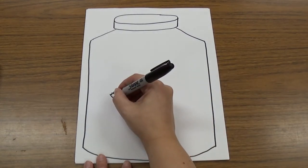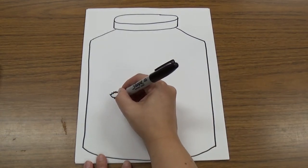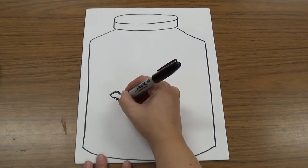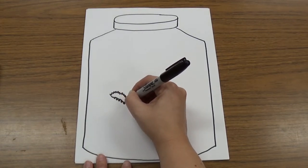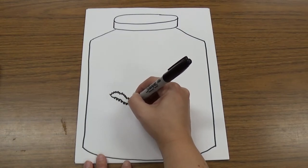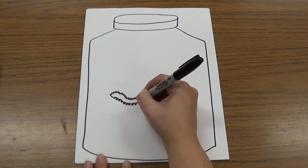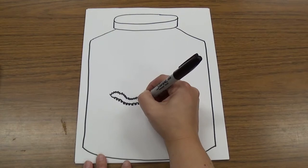Then I can make little feet on my caterpillar if I want to. They have little teeny tiny feet all the way along the bottom. I'm just making little rectangles for those feet. Little teeny tiny feet all the way across.